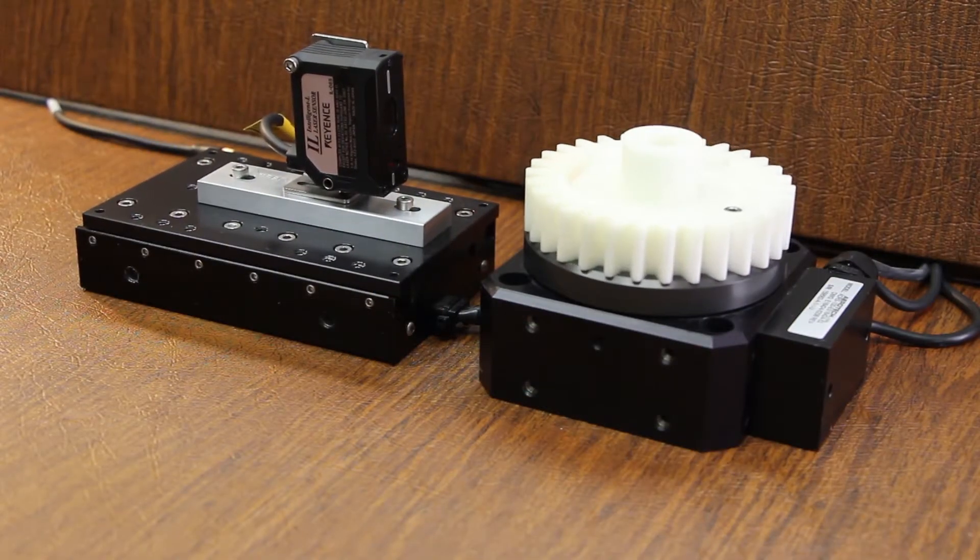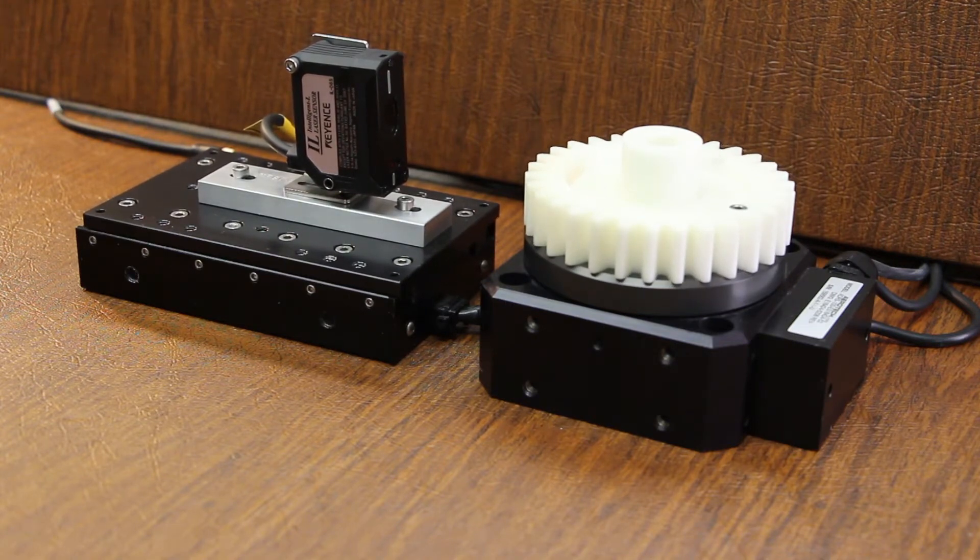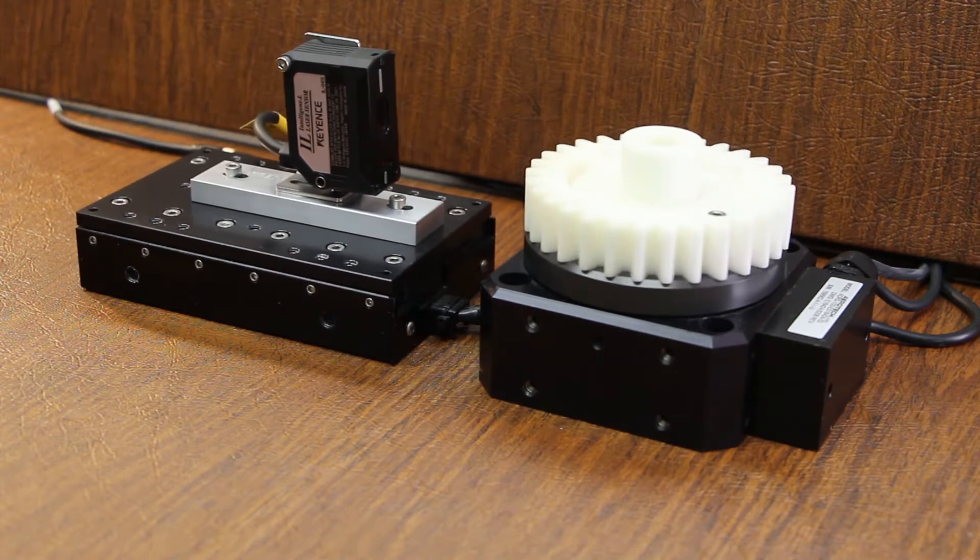Autofocus is useful for many applications, particularly when used in conjunction with an external sensor for surface profiling. In this example, a linear stage is carrying a laser displacement sensor, and next to it, a rotary stage is moving a simple gear.